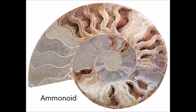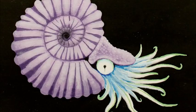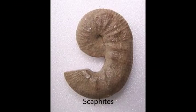Ammonoids also make great index fossils. These are cephalopods that first appeared in the Devonian around 400 million years ago, and went extinct at the end of the Cretaceous, around 65 million years ago. One such ammonoid index fossil is Scaphites, which only lived during the Cretaceous period, from 146 to 65 million years ago.